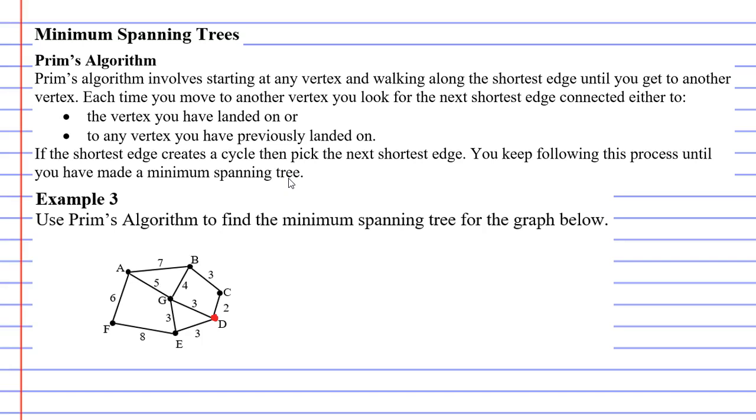What you do is you look for the shortest edge that connects to this vertex, and that is the number 2. So we're going to go along there, and it's going to join us with vertex C. So we've now got two vertices that we're focusing on, C and D.